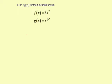Find f of g of x for the functions shown. f of x equals 3x squared, g of x equals x to the 1 half. So we're going to do the g of x first, and then the f of x second. So I'm going to substitute this g of x inside the f of x function.